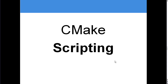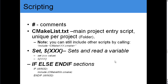CMake scripting — I'm just going to go through the basics. The hash sign is used for comments. CMakeLists.txt is the main project entry script; it is unique per project or folder. You can still include other scripts by calling 'include'. You can use variables — you can set a variable, and in this example we declare the variable named XXX, and you can read variables using the dollar-sign-brace syntax. You can use if, else, and endif sections, for example a WIN32 section. You can also use your variables in these sections.